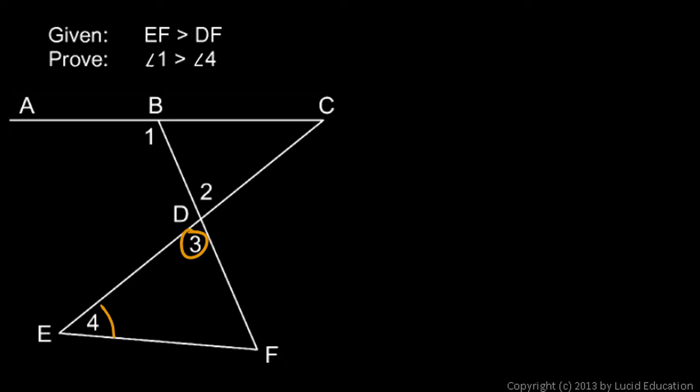Now look at angles 2 and 3 — those are vertical angles, so they have to be equal. So if angle 3 is bigger than angle 4, then angle 2, since it's equal to angle 3, must also be bigger than angle 4.